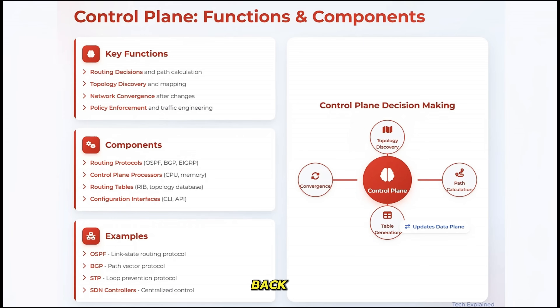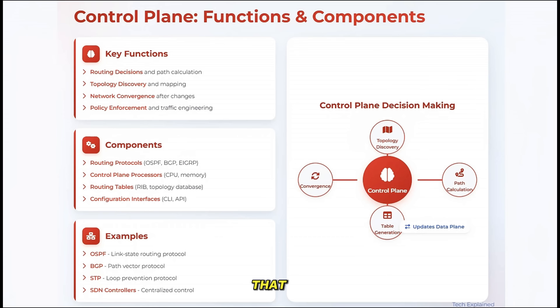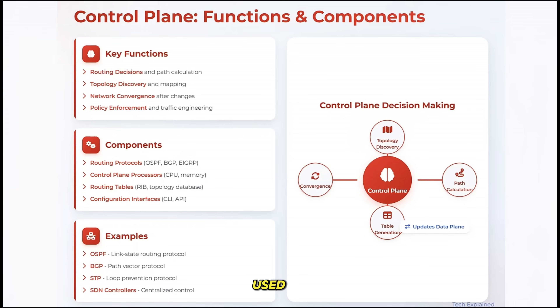Going back to our postal worker analogy, the control plane would be the postal service's management system that decides the delivery routes, updates them when roads close, and ensures the most efficient delivery paths are used.